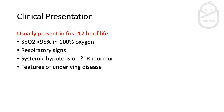The usual presentation is within the first 12 hours of life, where you will find reduced oxygen saturations less than 95% even in 100% oxygen. There may be respiratory signs if there is a lung pathology, or on auscultation you may hear a murmur of tricuspid regurgitation. You can also see features of an underlying disease, like for example sepsis.